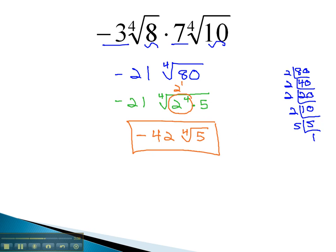When multiplying, we multiply the outside numbers, keeping them outside, and the numbers inside the radical, and keep them inside the radical.